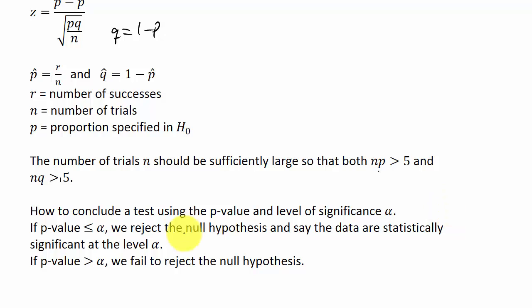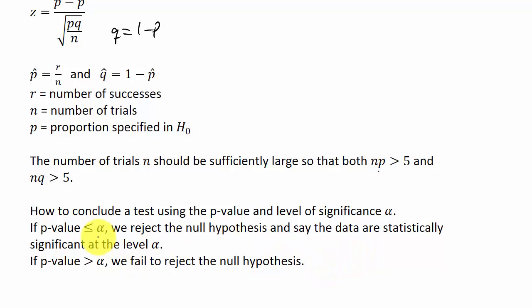So how do we conclude the test? Using the P-value and the level of significance alpha. Alpha is given in the problem — it could be 1%, 5%, or 10%, so alpha could be 0.01, 0.05, or 0.10. If our P-value is less than or equal to alpha, we reject the null hypothesis and say the data are statistically significant at level alpha. If the P-value is greater than alpha, we fail to reject the null hypothesis.